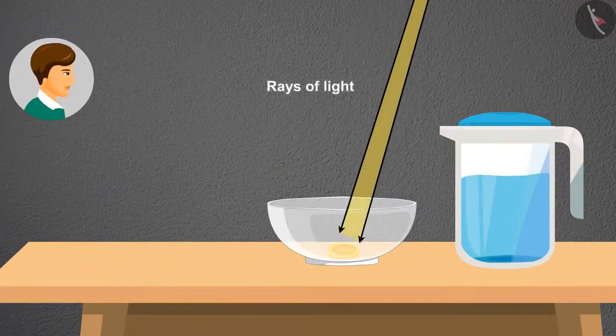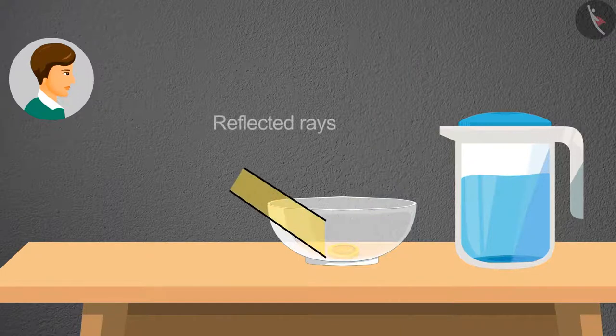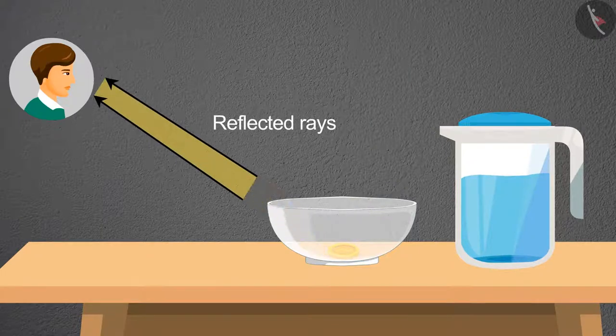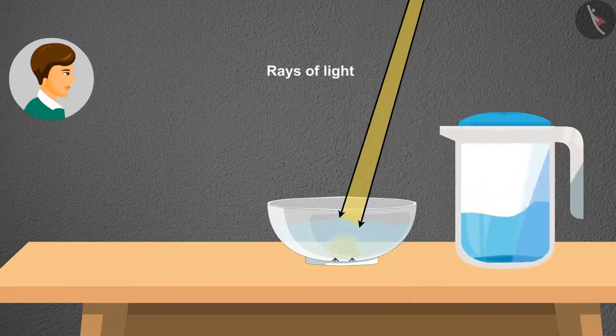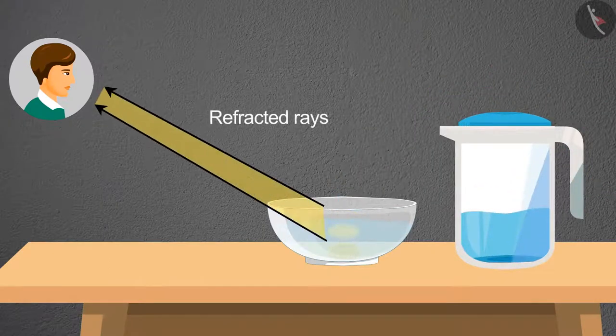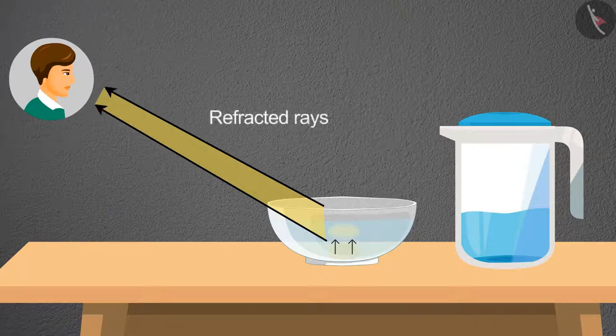Firstly, the rays of light while entering your eyes were reflected by the coin. But when I fill this bowl with water, the rays enter your eyes after being refracted. Due to which you could see the coin.